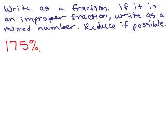Here's another problem. We want to write this percent, 175%, as a fraction, and if it's an improper fraction, we want to write it as a mixed number and reduce if possible. There's a couple ways of working through this problem. First of all, remember this means just divide by 100. So one way is we start out the same, 175 divided by 100.